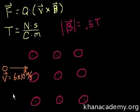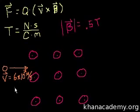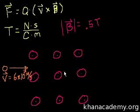We're pretty much in the relativistic realm, but we'll assume the mass hasn't increased significantly at this point. So we have this proton going at a fifth of the speed of light, crossing through this magnetic field. The first question is: what is the magnitude and direction of the force on this proton from this magnetic field?